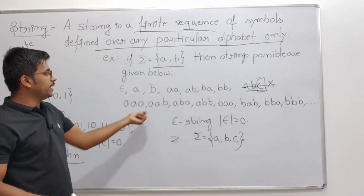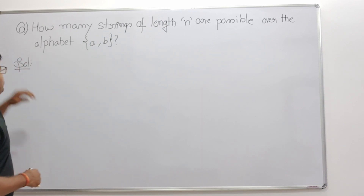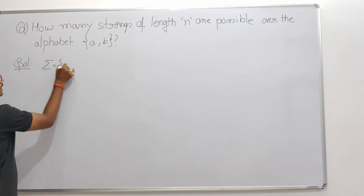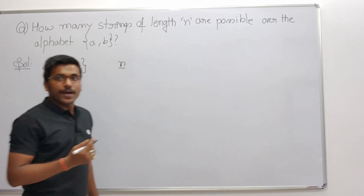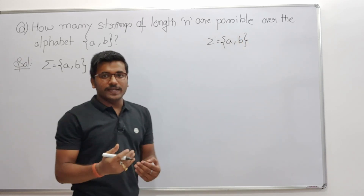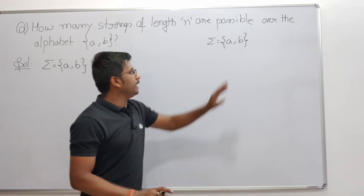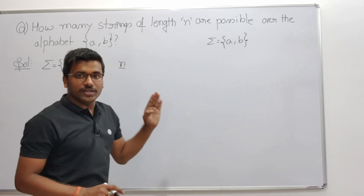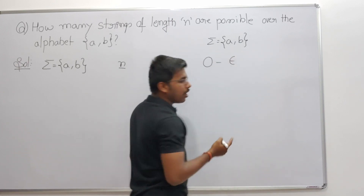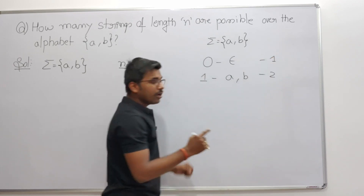Now a question: how many strings of length N are possible over the alphabet {A, B}? When sigma = {A, B}, for length zero, only one string is possible: epsilon. For length one: A or B — two strings. For length two: first symbol can be A or B (two options), second symbol can also be A or B (two options), so 2 × 2 = 4 strings: AA, AB, BA, BB.